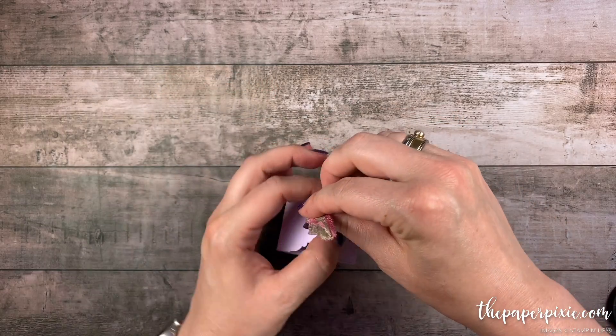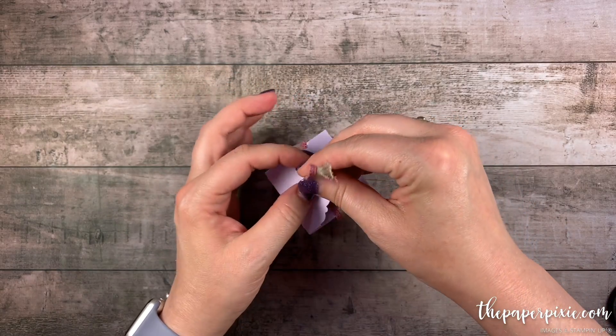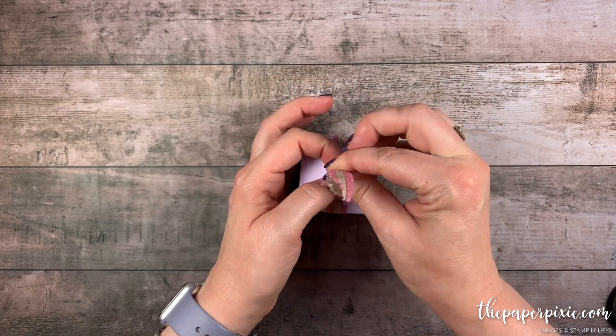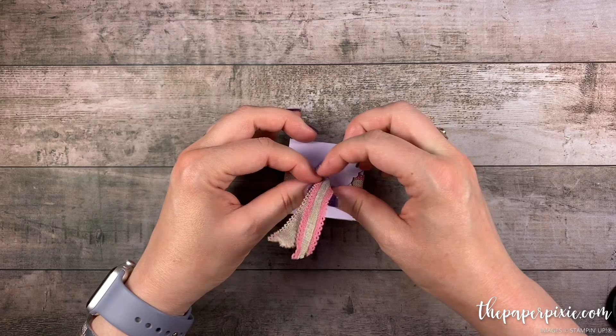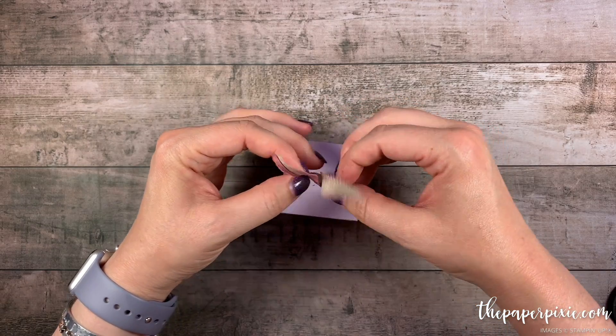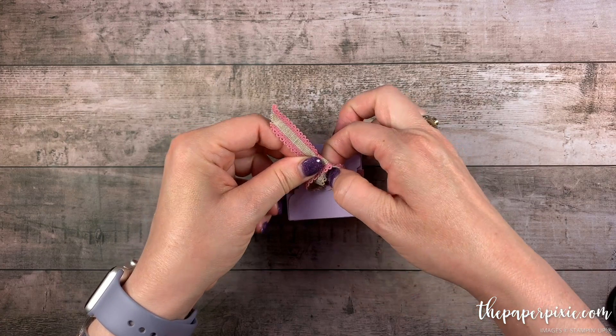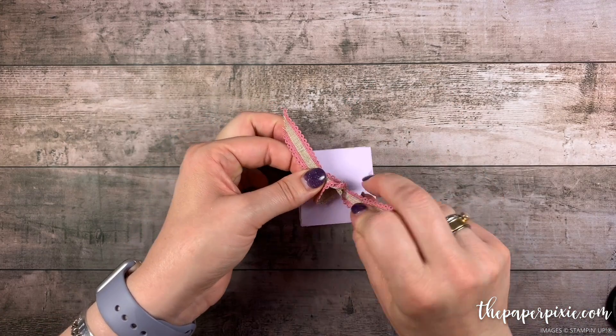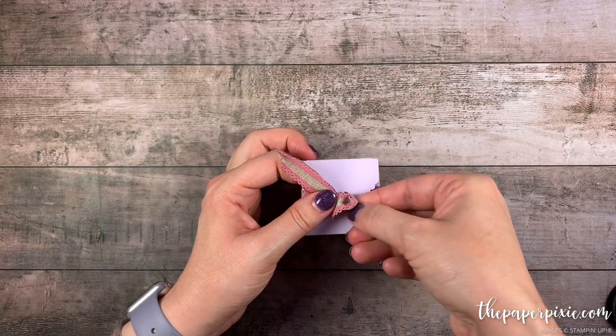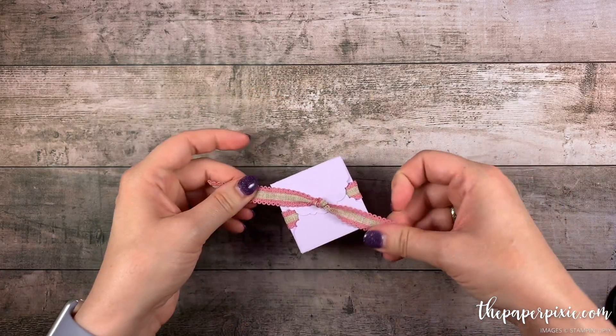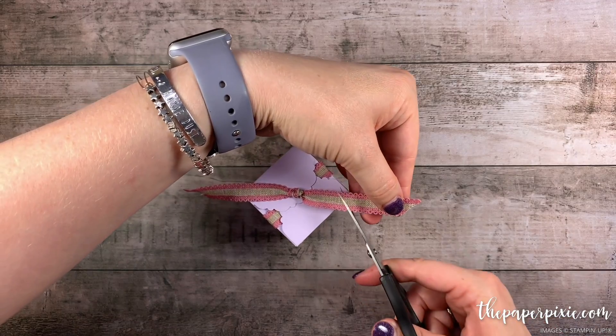And then we can gently pull that ribbon taut. And then I'm just going to tie this in a little half knot. As I bring this right side of the ribbon through I'm also going to kind of twist it so that we've got the Rococo Rose side of it facing up. And then I'm just going to cut those ends at an angle.